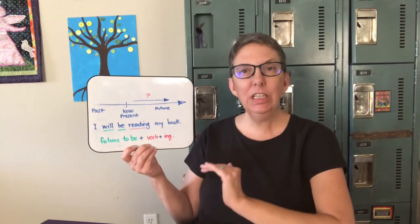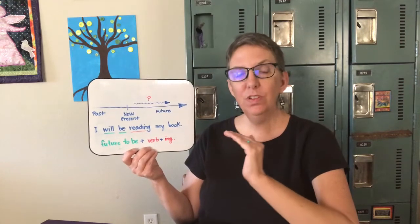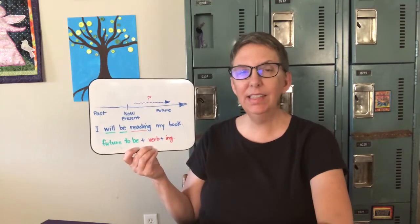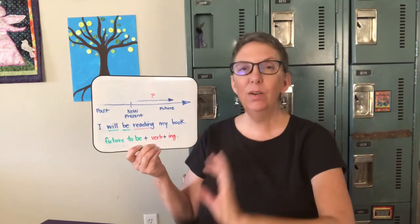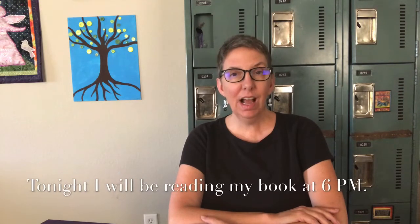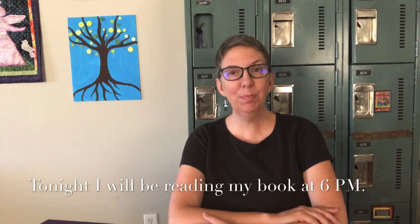We don't actually use the future continuous or future progressive without a little more information. We wouldn't just say 'I will be reading my book' without adding more context. One of the most common ways we use this tense is to tell you when the action will happen. So as an example, we could say: tonight I will be reading my book at 6 p.m.